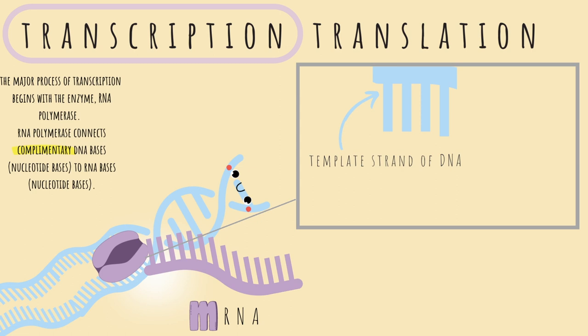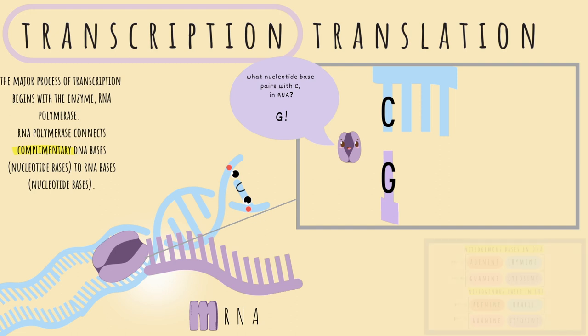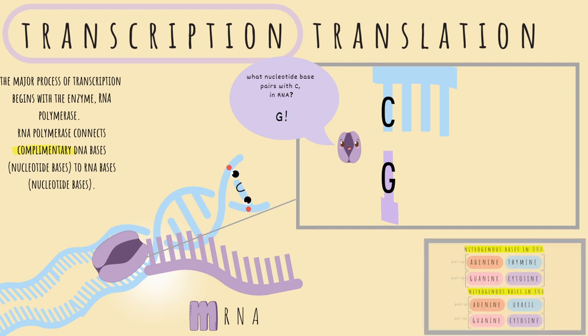So this is our template strand of DNA. The template strand has nucleotide bases — here we have C representing cytosine. RNA polymerase asks: what nucleotide base pairs with cytosine in RNA? Guanine pairs with cytosine in RNA, so it will make guanine. Here are the base pairs for reference — it's absolutely mandatory that you remember and memorize these base pairs.